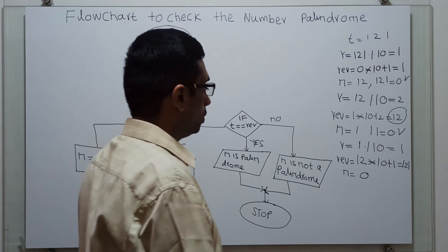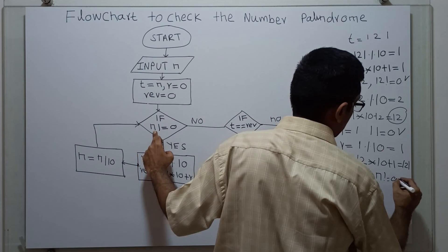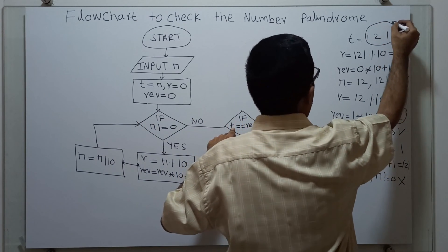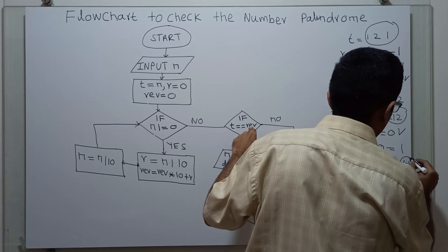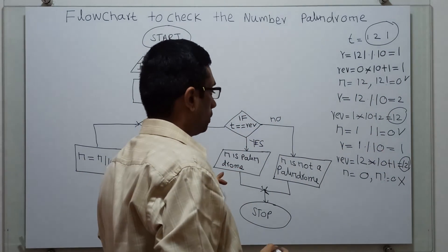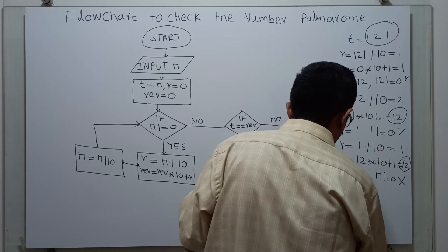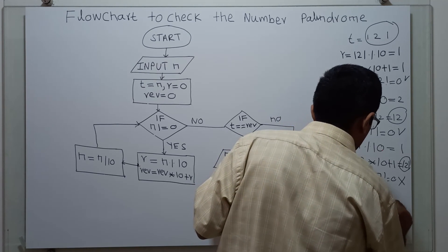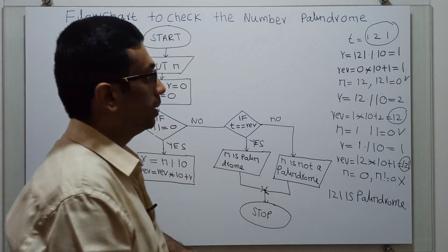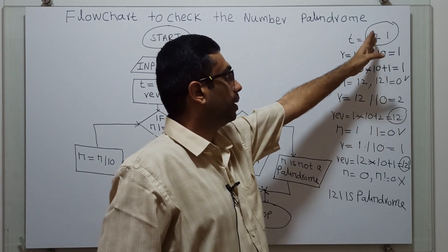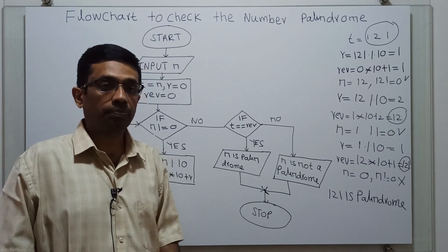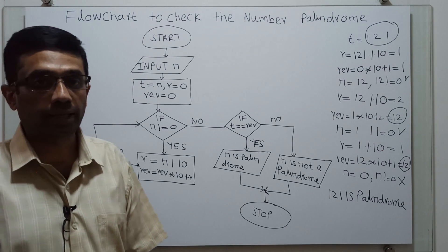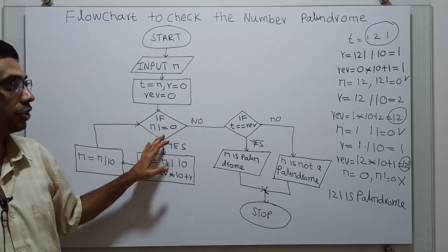N not equal to 0 is false. It checks T: value of T equals 121. T equals reverse — what is the value of reverse? Reverse equals 121. So T equals reverse — it will print N is palindrome. It will print 121 is palindrome. If some other number like 123 is given, it will be 321, so it will not be a palindrome. So this is the logic. We have drawn the flowchart to check the given number is a palindrome or not, traced it, and found the result. The flowchart is working correctly.